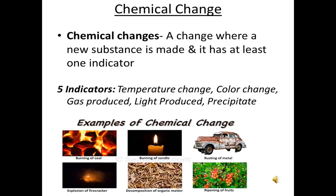Chemical changes are changes where a new substance is made and it has at least one indicator. The five indicators are: temperature change, color change, gas produced, light produced, and precipitate. Examples of chemical changes are: burning of coal, burning of candle, rusting of metal, explosion of firecracker, decomposition of organic matter, and ripening of fruits.